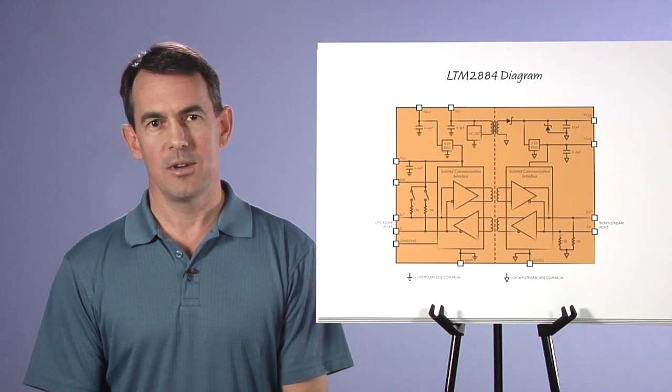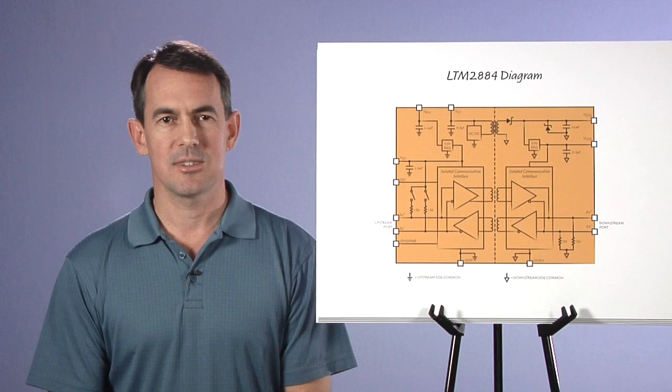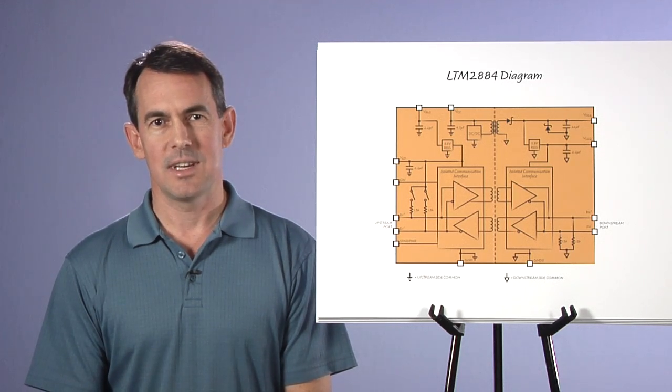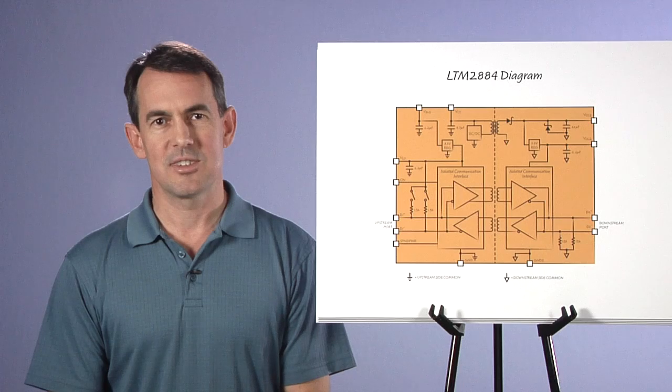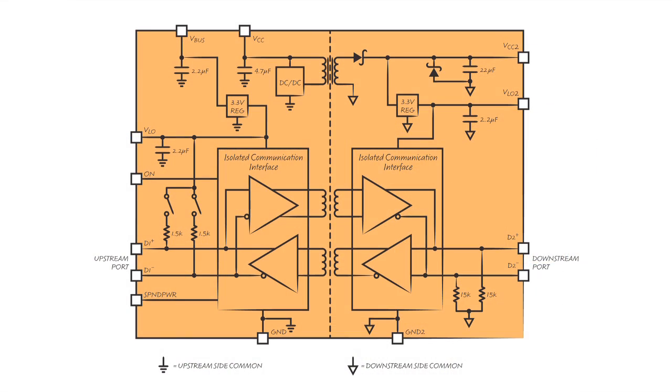One choice is to not suspend power, which will keep the DC to DC powering VCC2. This allows the LTM2884 to detect isolated side activity and respond properly and meets the suspend requirement when VCC is powered separately from VBUS. The other choice is to suspend power by tying the suspend power pin high so the DC to DC converter is disabled.